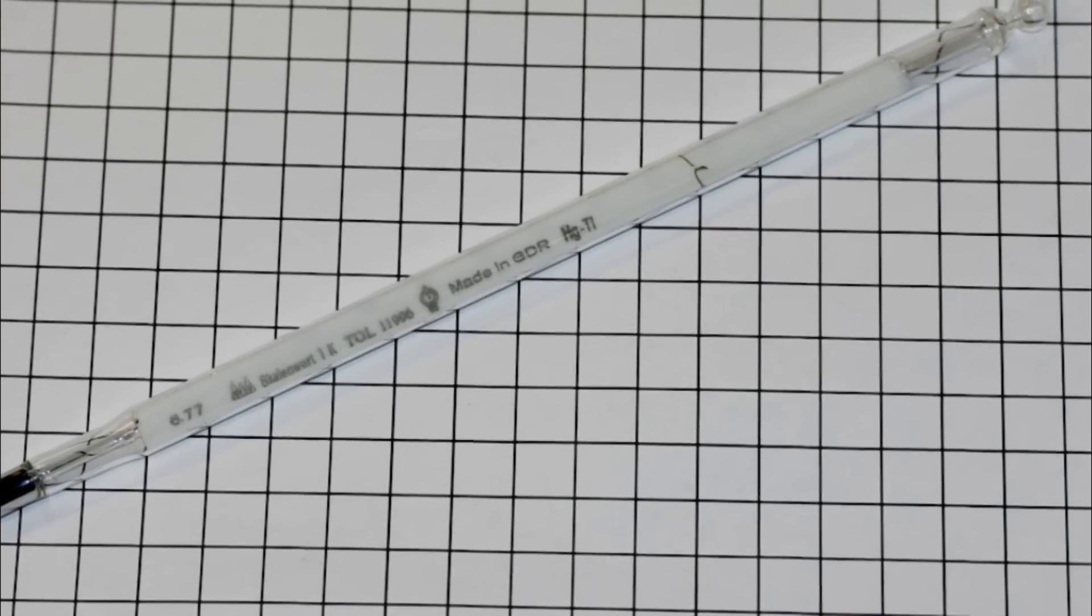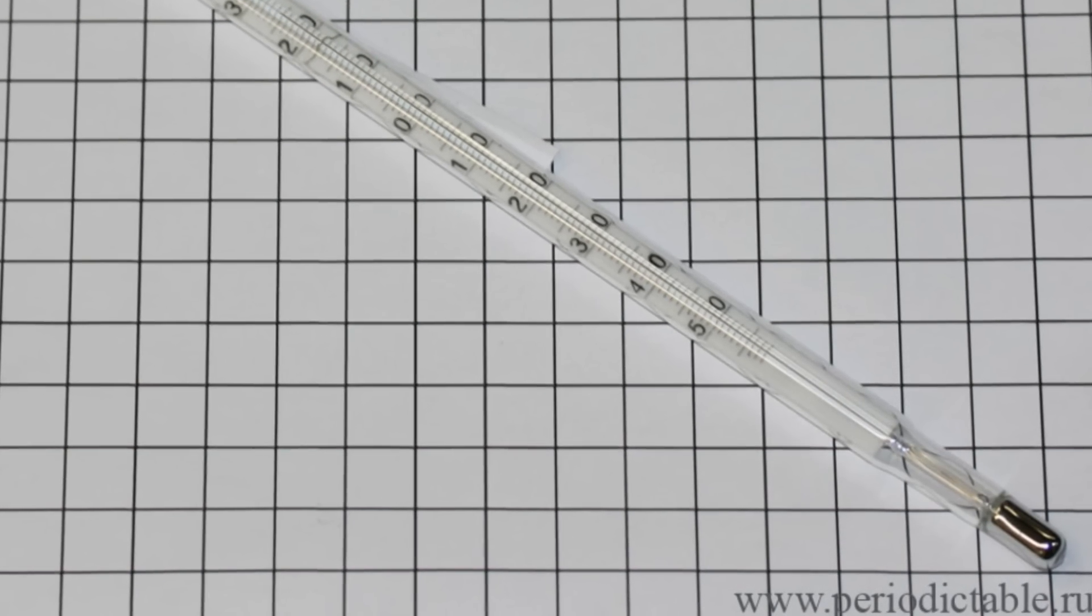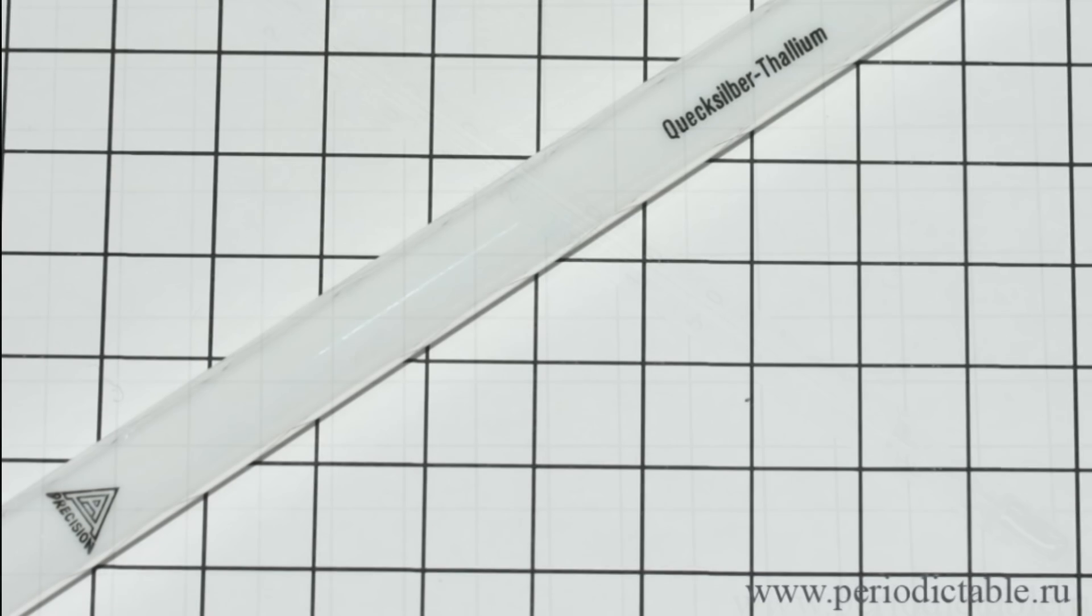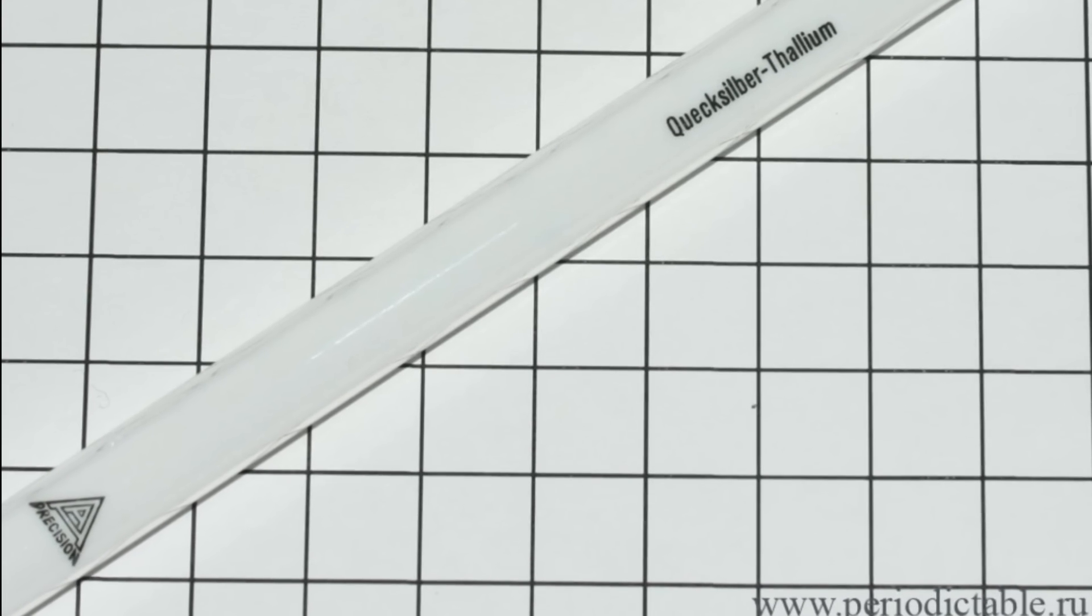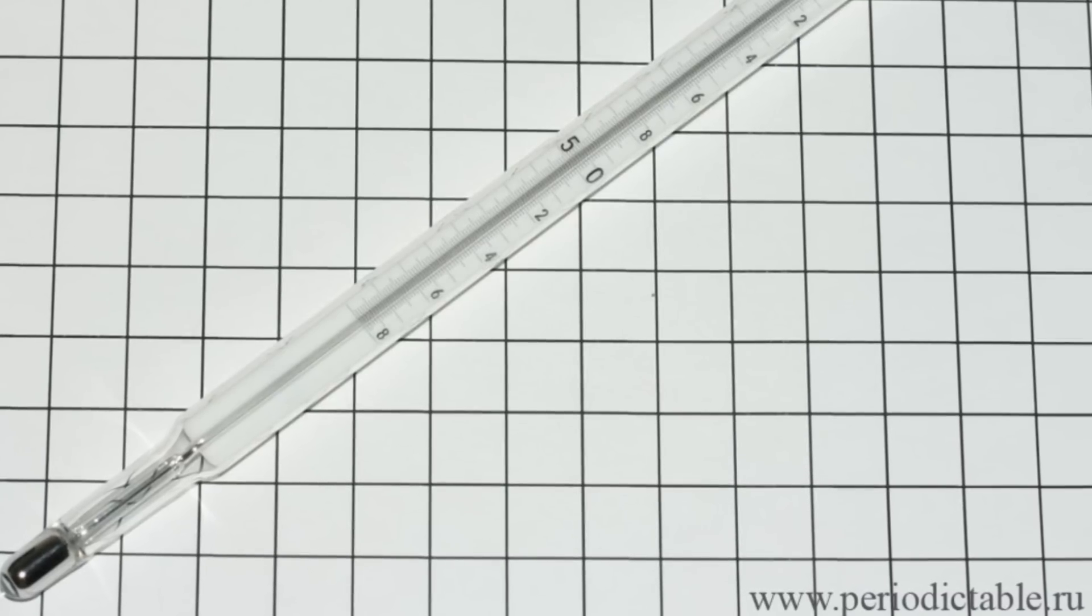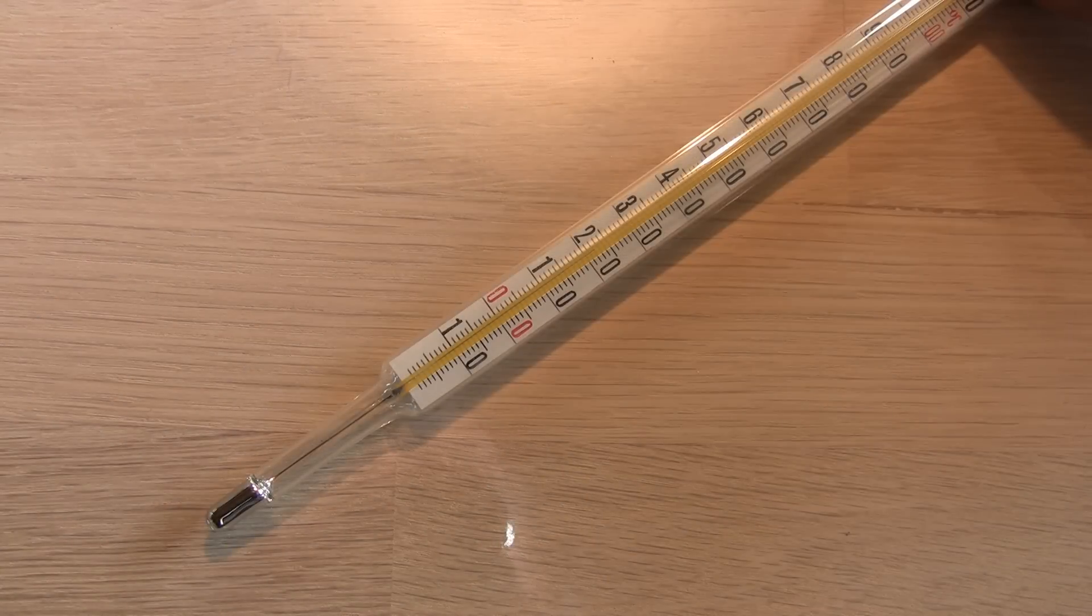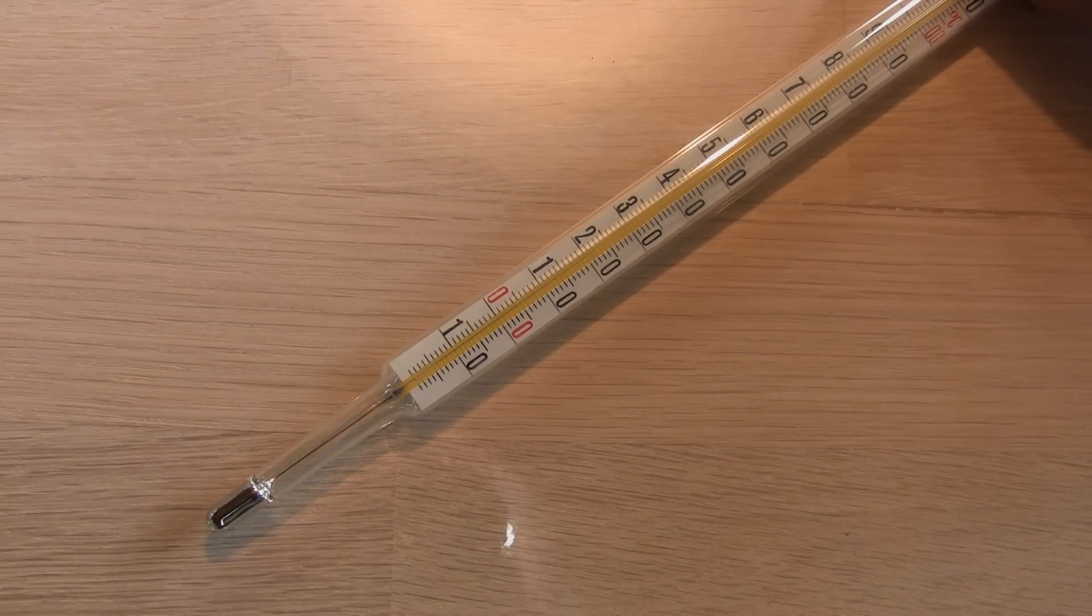This is utilized in low temperature thermometers. I don't have a mercury thallium thermometer but luckily there's a great guy running the website periodictable.ru where he shows some stunning element samples. He let me use these pictures of his special thermometers. In comparison my mercury thermometer only goes to minus 19 degrees Celsius or minus 2 degrees Fahrenheit.